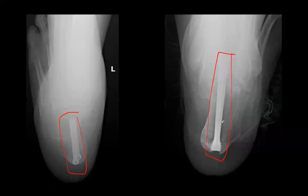Headless compression screws are used where you don't want a prominent head — bunions, midfoot, heel. On the heel, we use them so patients aren't walking on screw heads. However, bony overgrowth occurs over years, so if you ever need to remove a headless compression screw, you'll likely need to chip away bone first. If you plan to remove hardware, use a headed screw for easier later retrieval.